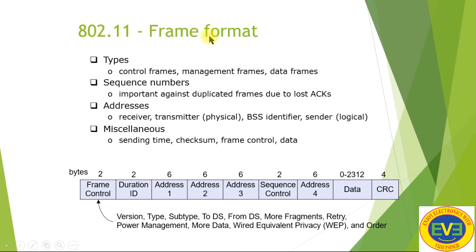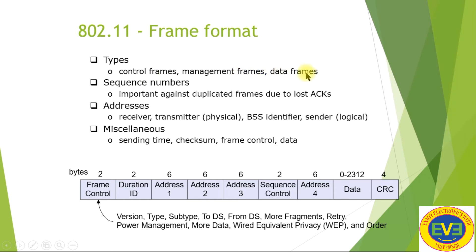The frame format has three types: control frames, management frames, and data frames. Sequence numbers protect against duplicate frames due to packet loss. Address fields include receiver, transmitter, BSS identifier, and sender. Other fields include duration, miscellaneous sending time, checksum, frame control, and data — all visible in the frame structure. Sequence control, addresses, data, and CRC are present in the data frame type.